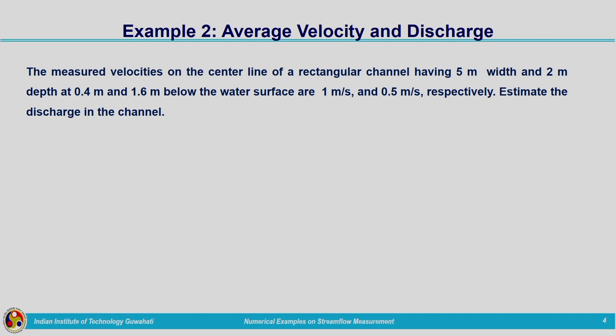The question: the measured velocities on the center line of a rectangular channel having 5 meters width and 2 meters depth, at 0.4 meters and 1.6 meters below the water surface, are 1 meter per second and 0.5 meters per second respectively. Estimate the discharge in the channel. Here the velocity at two different depths in a rectangular channel is given, and we need to compute the discharge.